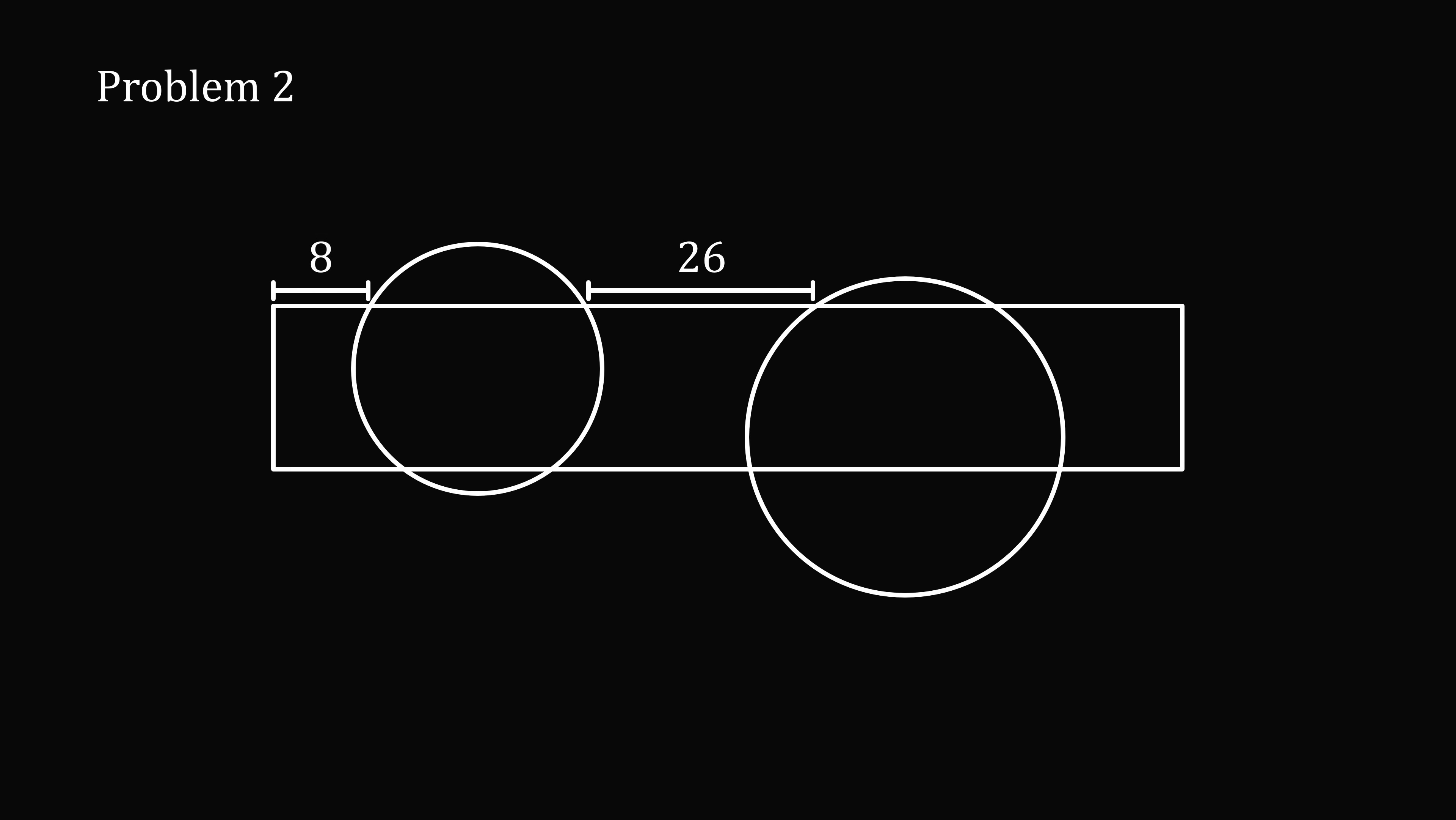Problem 2. This comes from a math kangaroo competition. A rectangle is divided by two circles. The top side of the rectangle is divided into three segments, as is the bottom side. The three segments on the top side have lengths of 8, 26, and 22. On the bottom side, two lengths are equal to 12 and 24. What is the third length equal to?